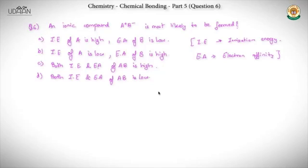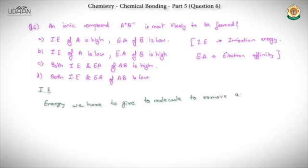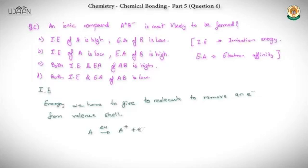So let's start with: what is ionization energy? Ionization energy is the energy we have to give to an atom to remove an electron from its valence shell — basically to create a cation. When we have A converting into A⁺ plus an electron, we have to give it energy so that the electron is excited and exits the valence shell. That particular energy is called ionization energy.